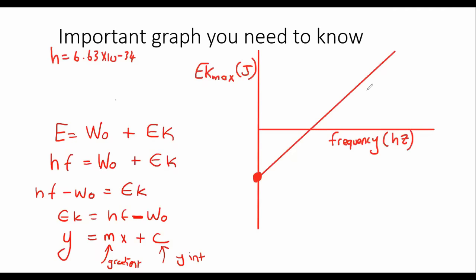Now, so what I want you to remember when they give you a graph like this in the test is that this is the gradient is going to be the gradient is going to be the same as h. See that? So the gradient is h. Your y-axis is going to be ekmax. And your y-intercept is going to be negative work function.